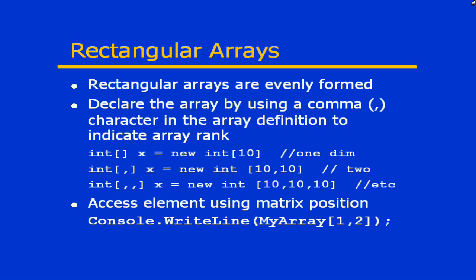For example, int x = new int[10] is a one-dimensional array. But if I was interested in a two-dimensional rectangular array, I could put a comma inside the open and closed square brackets after the data type identifier. That comma separates it into two individual dimensions, and when we create the array using the constructor, we indicate how many elements are in the first dimension and how many are in the second. If this is a 10 by 10 array, that means I have a total of 100 elements.